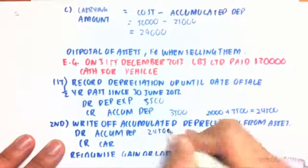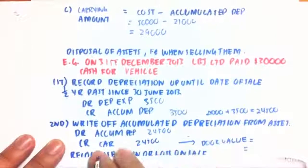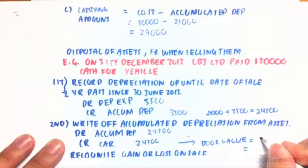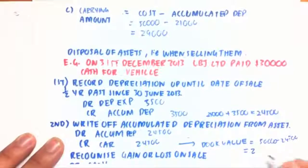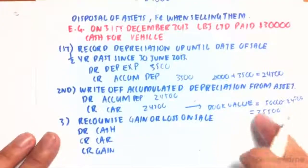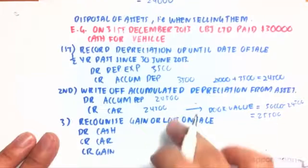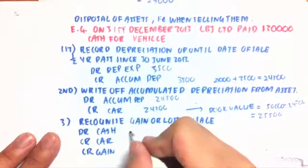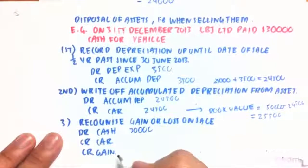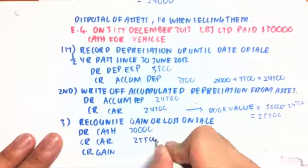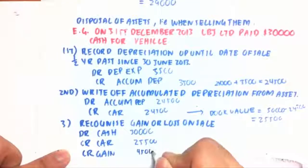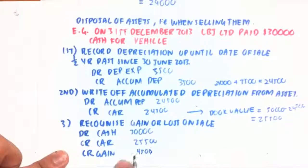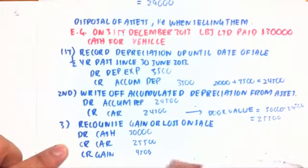With accumulated depreciation of $24,500, we reduce the car's value to its book value: $50,000 minus $24,500 equals $25,500. Knowing this book value, we recognize the gain or loss on sale. We debit cash by $30,000 and credit the car at its book value of $25,500. The gain here is $4,500, because we sold the vehicle for more than the economic value we thought it had.